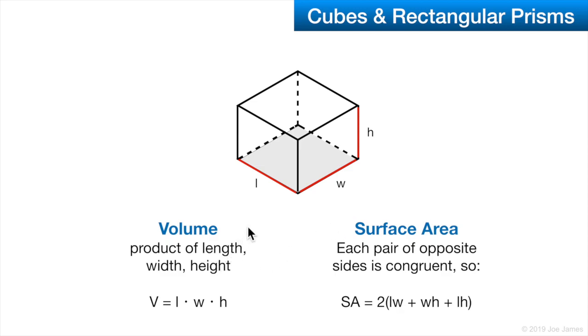The volume of a cube is just the product of length, width, and height, or x, y, and z coordinates. That's just a simple multiplication of those three values.